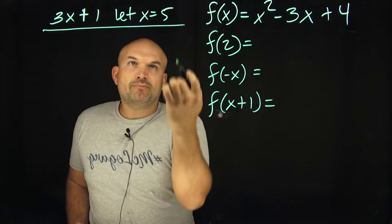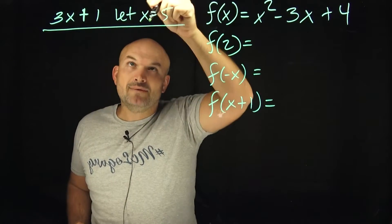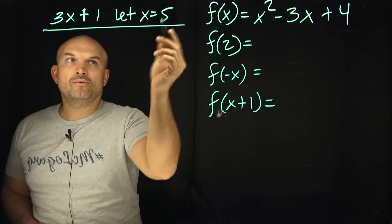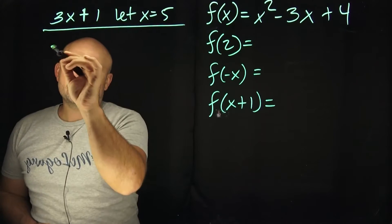And so what that means is you can just replace the 5 with the x. We're allowing this unknown x to have a value of 5. Therefore, when I plug a 5 in for the x, it just looks like this.